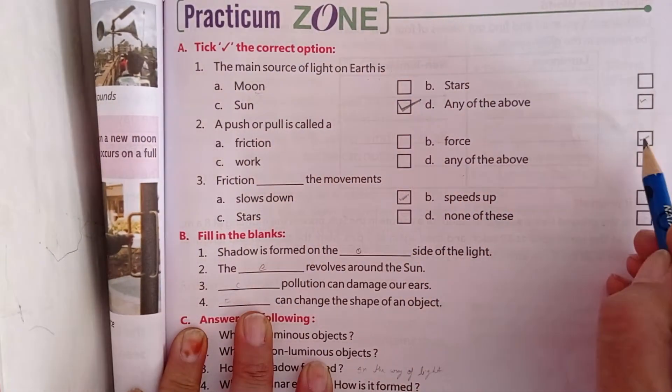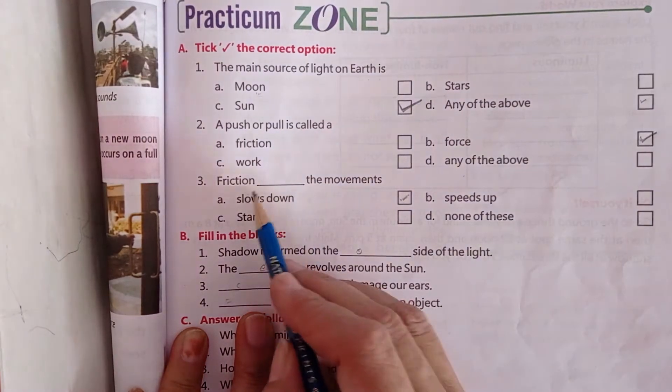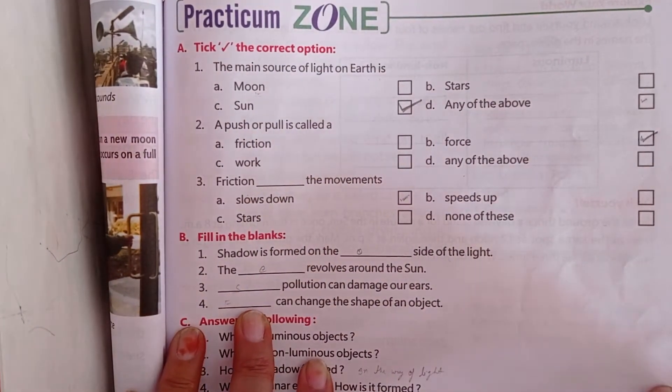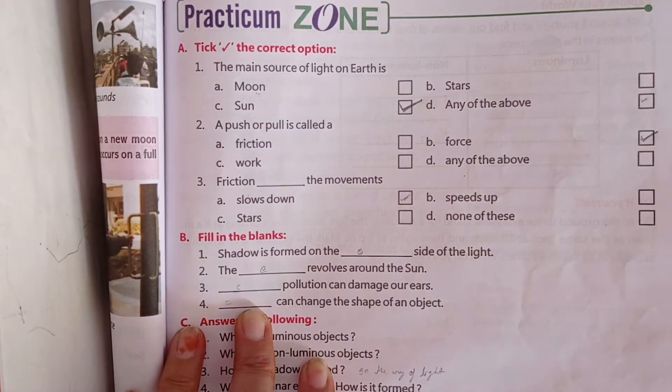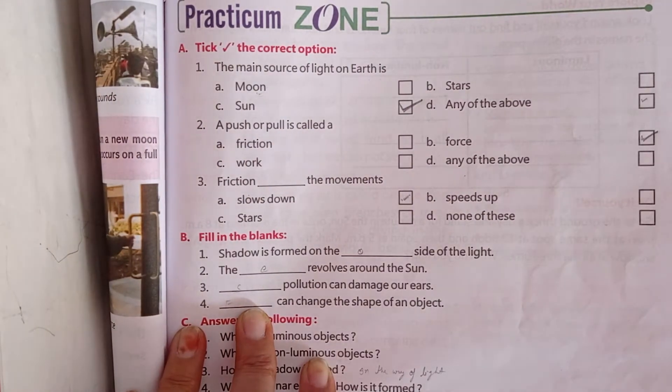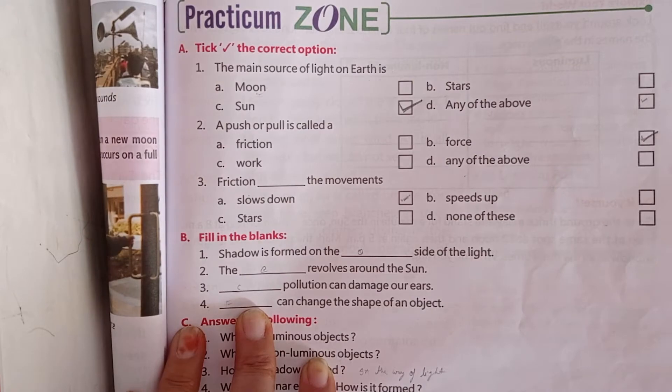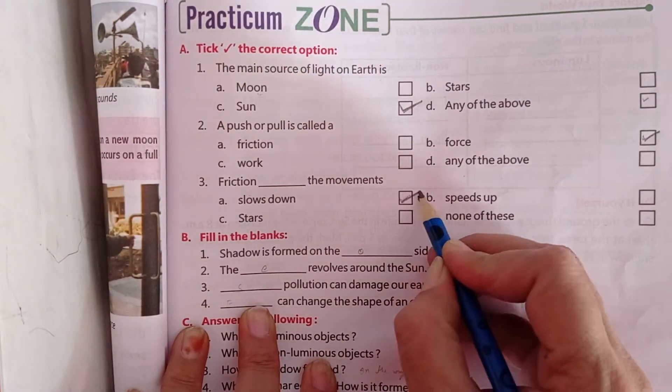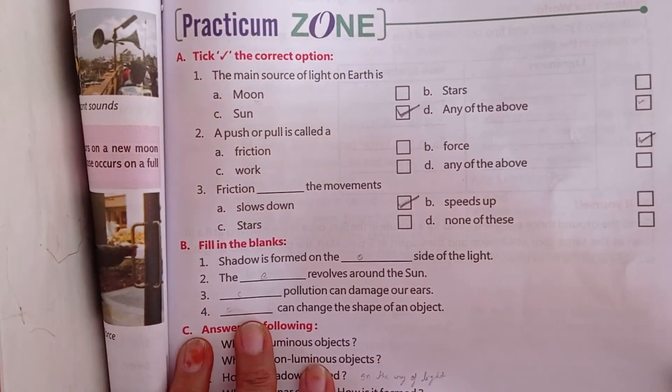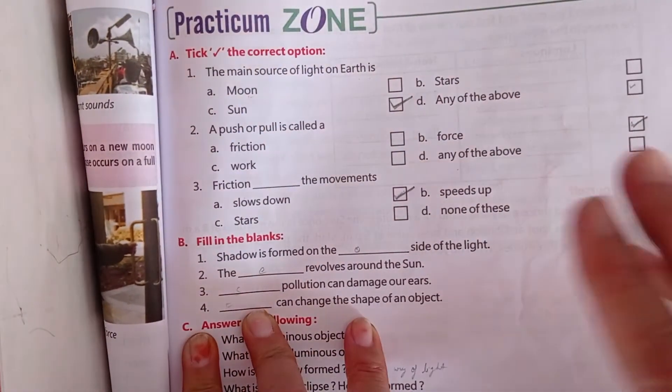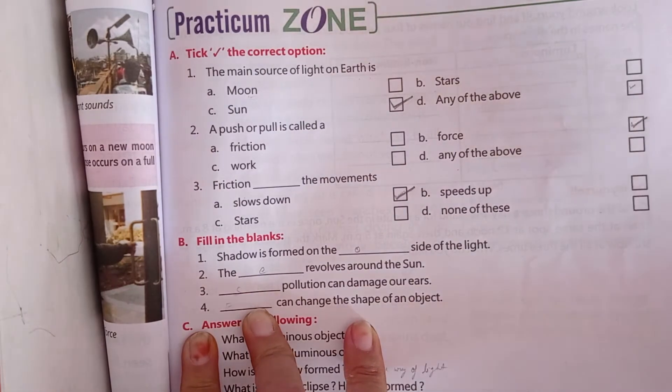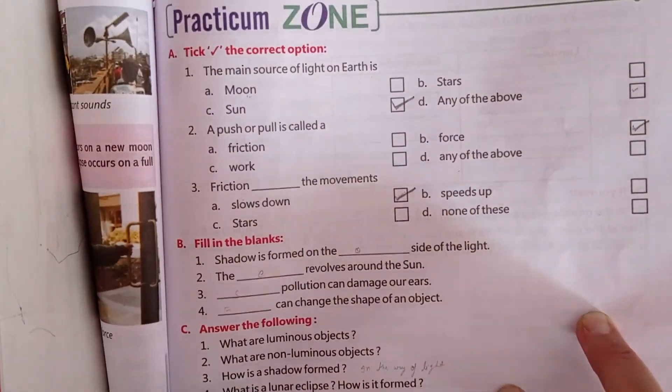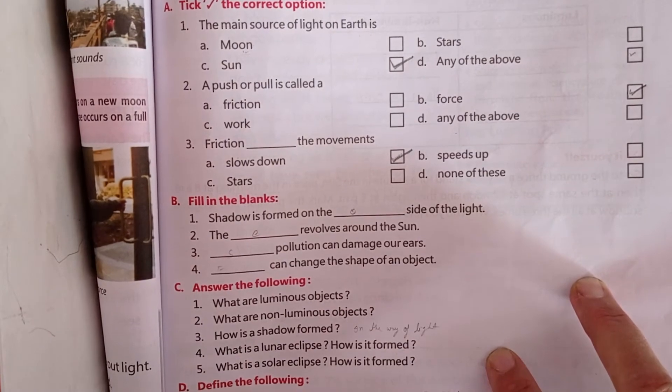Now push and pull is called force. Friction slows down the movement. We have studied friction. Friction is the force between objects. If there is friction, the speed of the object is reduced. If there is no friction, the object will move easily.